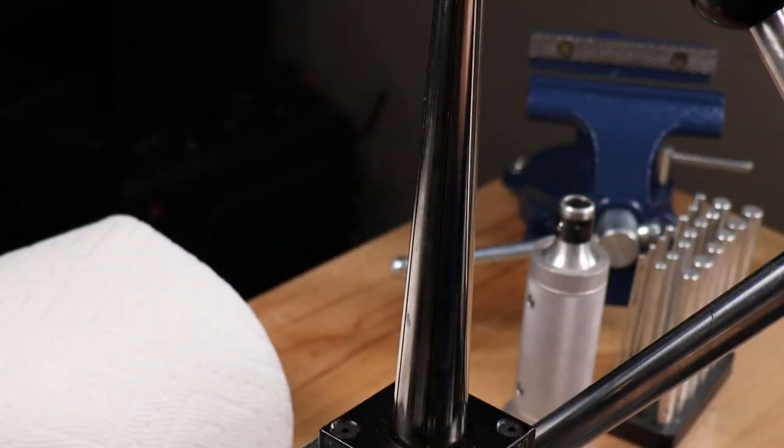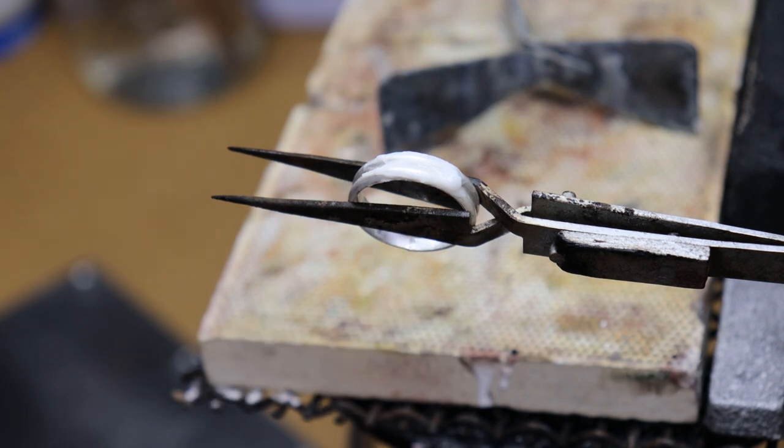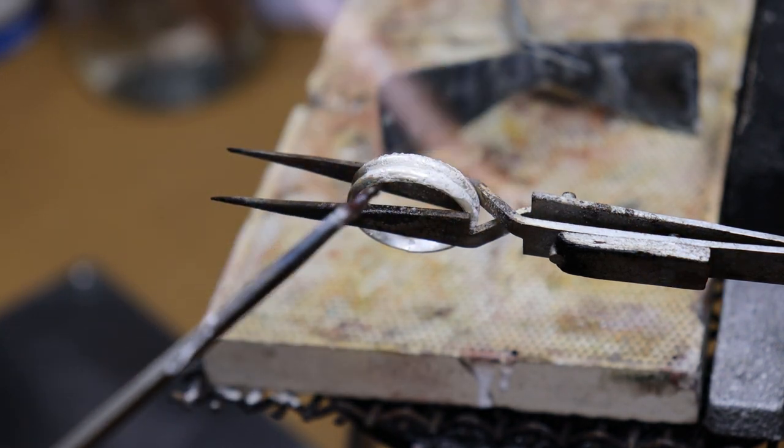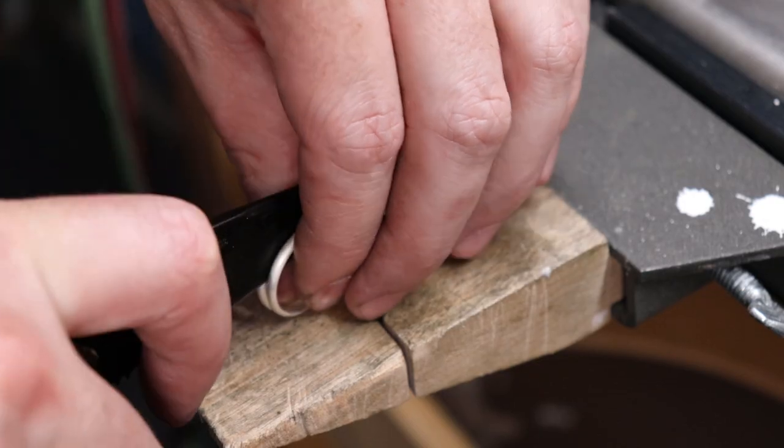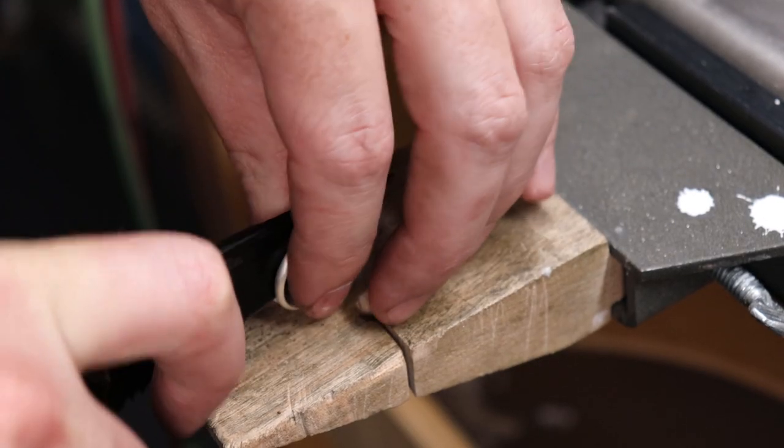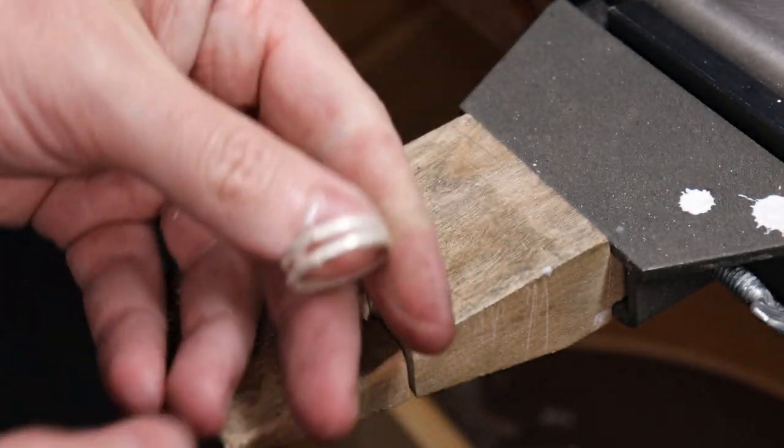Then using some crosslock tweezers, I'm going to hold them in place and solder just the bottom part of them together. And this is just one piece of medium solder. Once you get them soldered together, you need to wedge them apart. You can use a knife like I am, or whatever really fits in here and will get you the desired look.